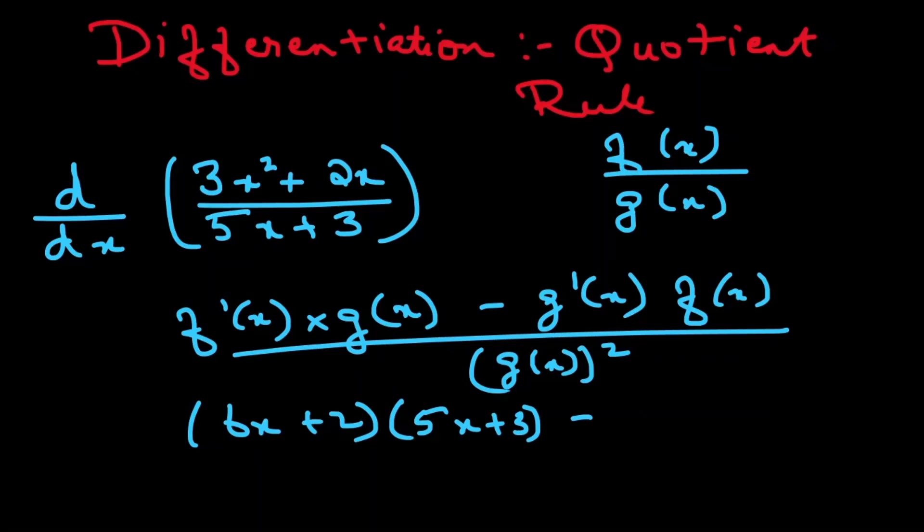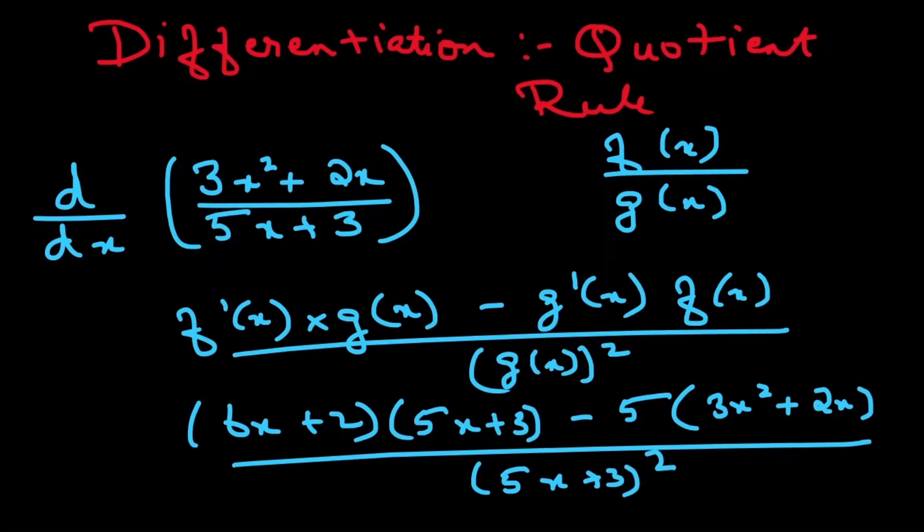So here I have 5x; 5x's derivative would be 5 and 3 would be just 0, times 3x² + 2x, whole divided by the denominator, which is (5x + 3)². And then you can choose to simplify this to get a final answer.